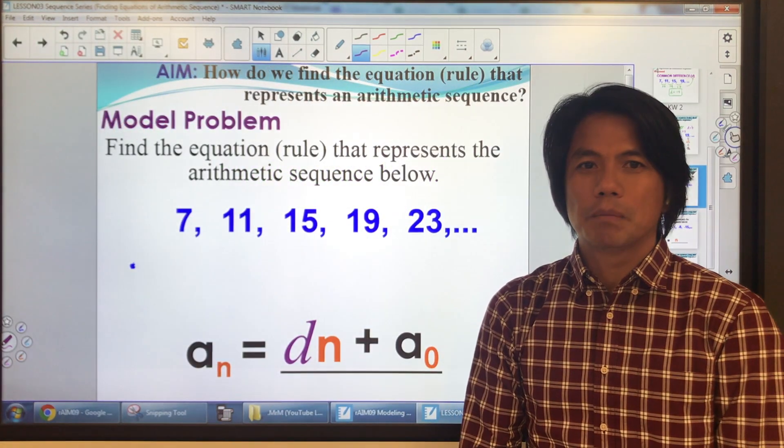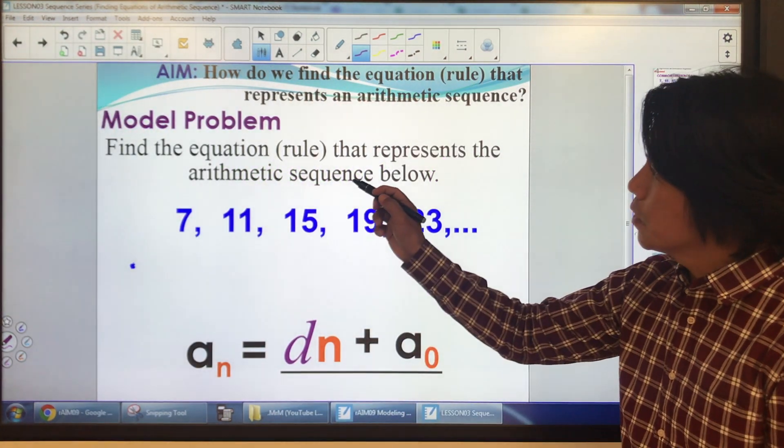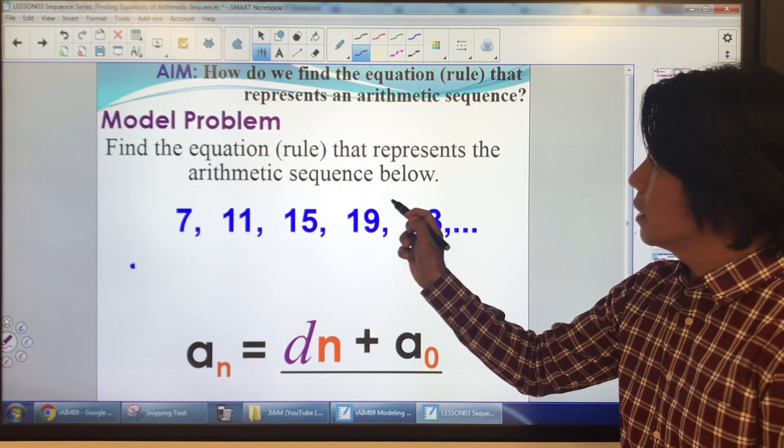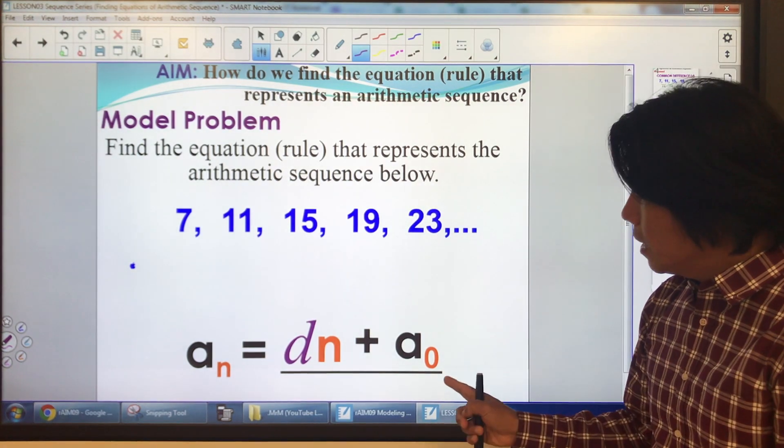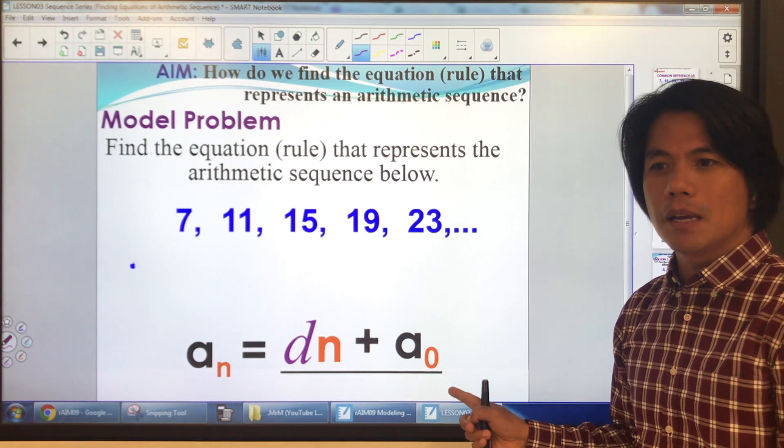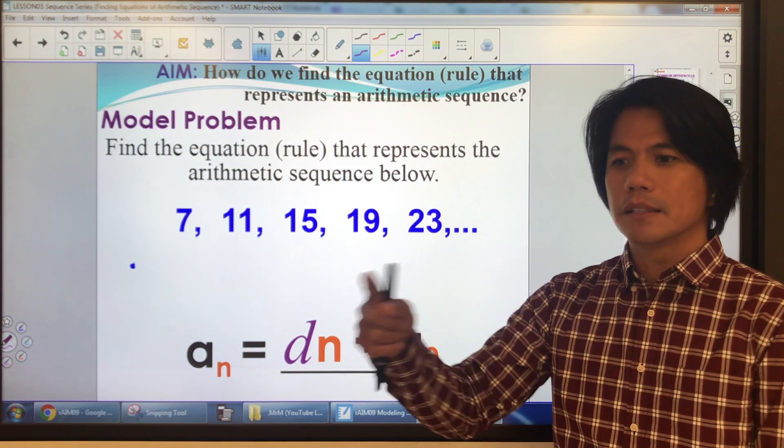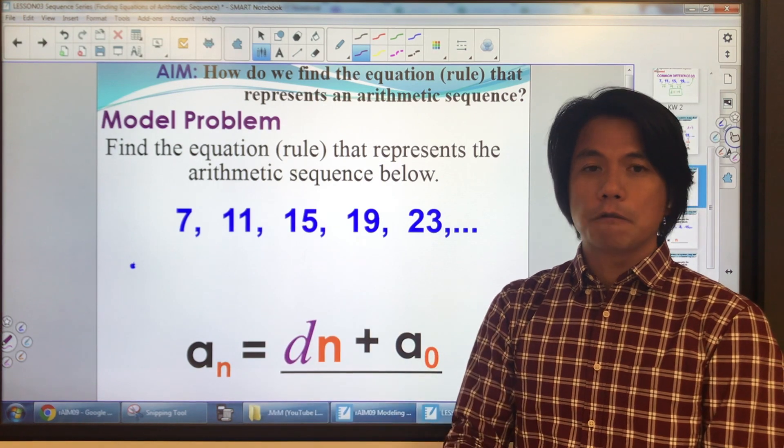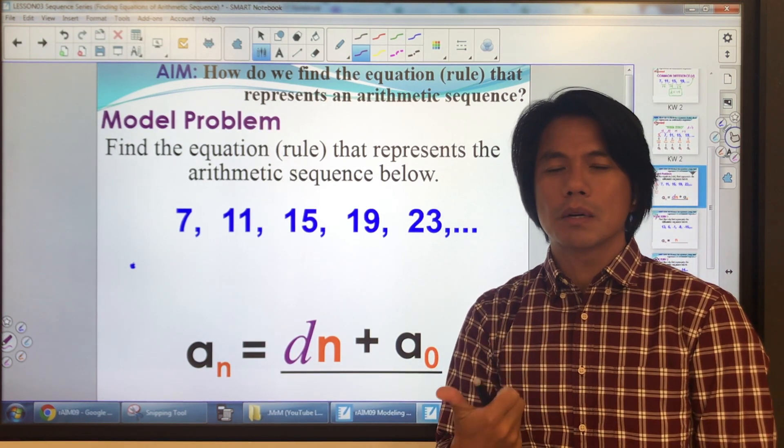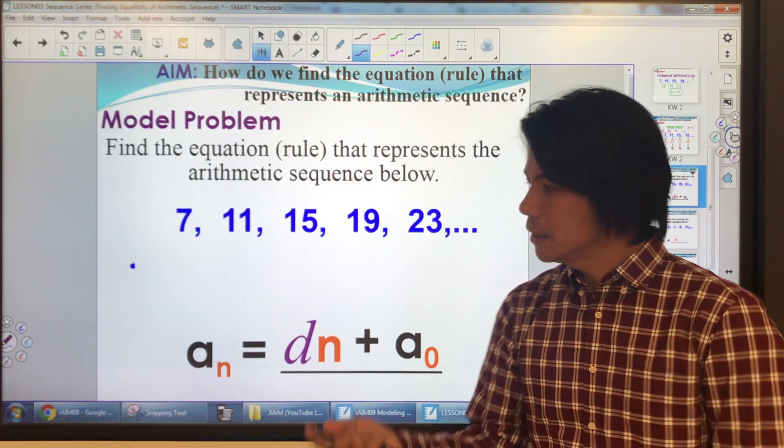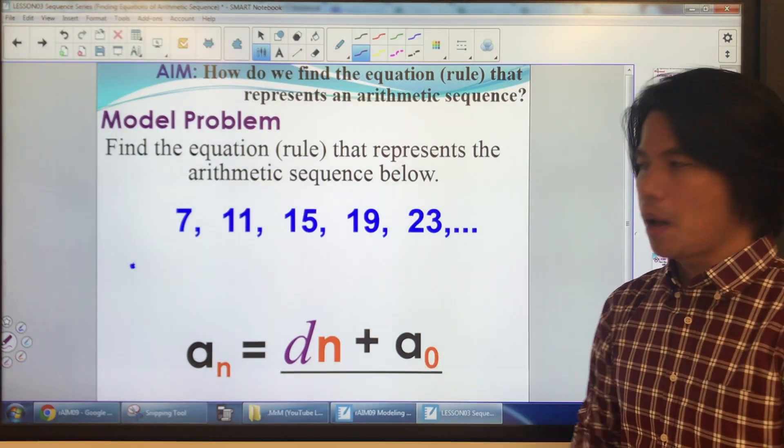Now, let's have the model problem. Find the equation or rule that represents the arithmetic sequence below. And here is a simpler formula that you can use. Actually, you can find a different, or another formula that you can find in books or in the internet, but this is simpler. I'm going to show you how.